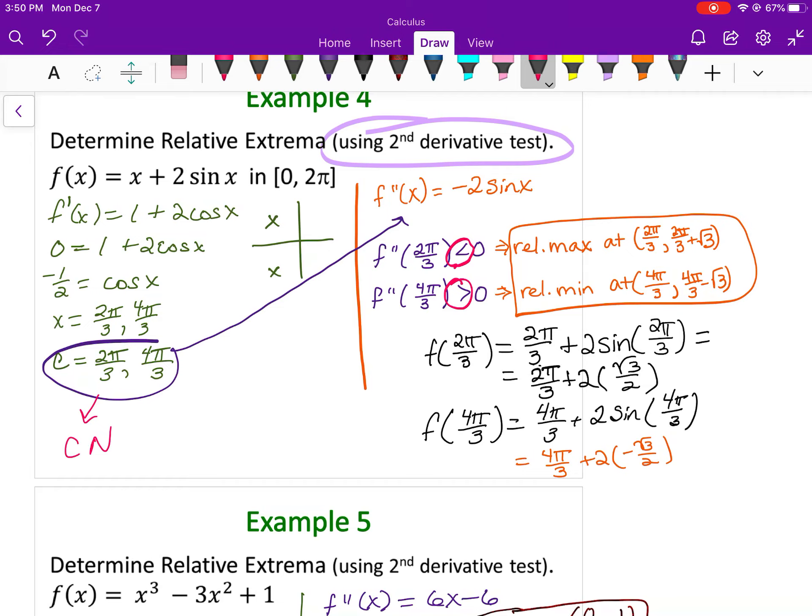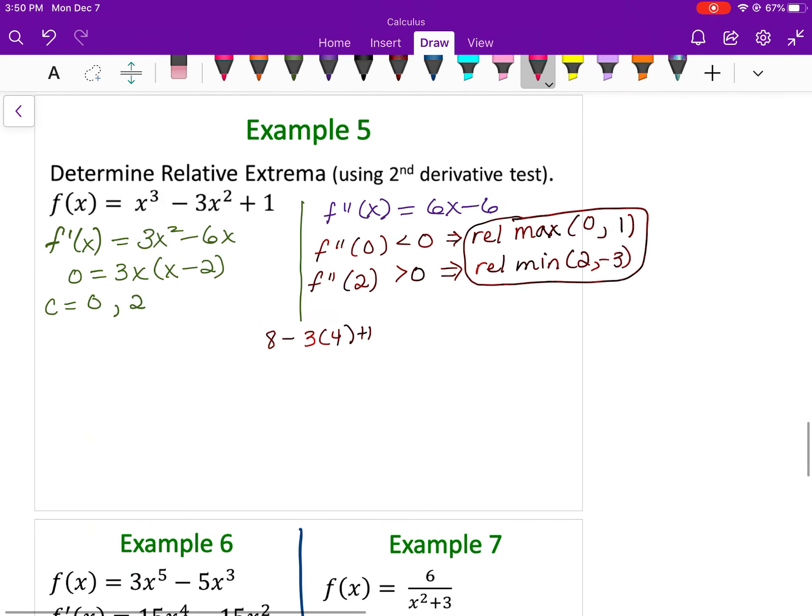Did the same thing here. These are critical numbers from the first derivative. We put those into the second derivative, and those are the conclusions we can draw.